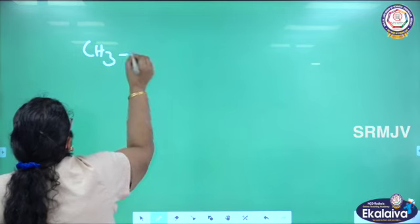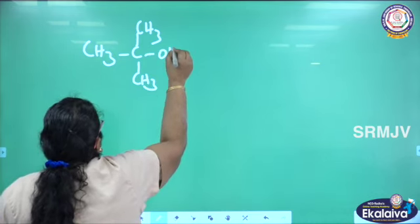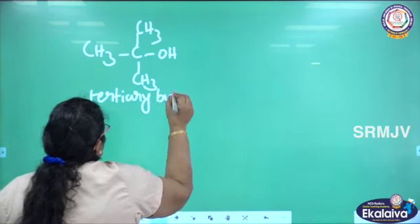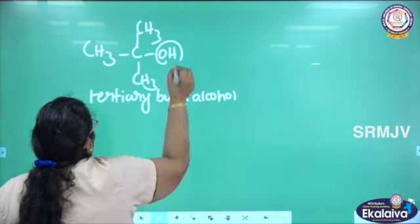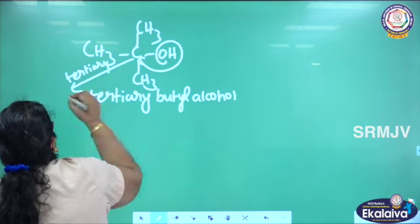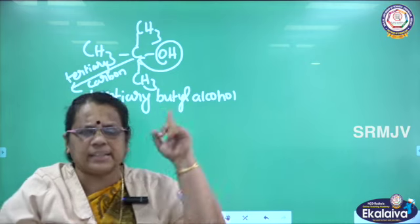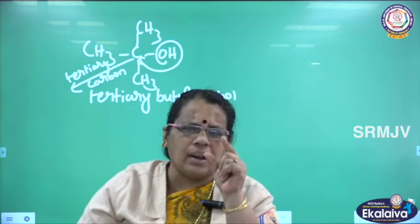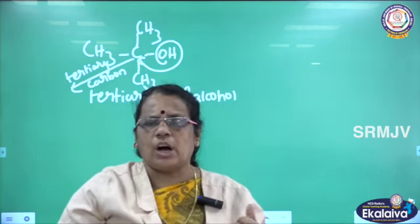Let me see the reactions one by one. This is tertiary alcohol: CH3-C(CH3)(CH3)-OH. What is the name of this alcohol? Tertiary butyl alcohol, which is a tertiary alcohol. The OH group is attached to tertiary carbon. What is tertiary carbon? Carbon having no hydrogen. See this carbon — it is alone in the center and doesn't have hydrogen. We can call such a carbon as tertiary carbon.